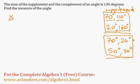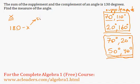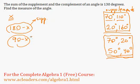Another example: the complement of 50 would be 40, because 40 plus 50 is 90 degrees. So how do we find the supplement of an angle? We subtract it from 180 — that's 180 minus x. And the complement is just 90 minus x.